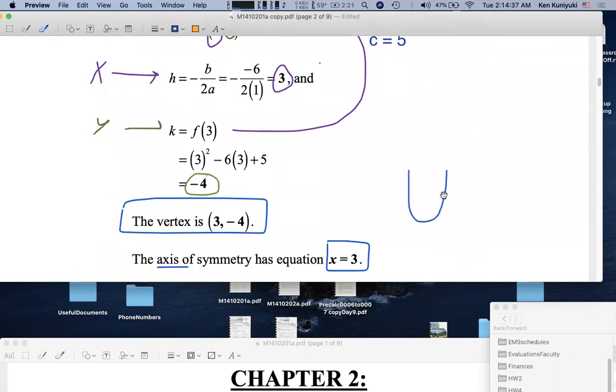Make sure it passes the VLT. This might be all we need to know about the parabola. The fact that it opens upward, the vertex is at 3 comma negative 4, and the axis of symmetry is at x equals 3. That might be all we need to know about this parabola, for all practical purposes.